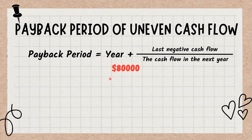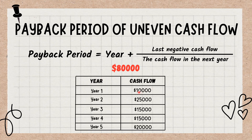A company invested $80,000 in project A, and it is expected that the project will generate $10,000 in the first year, $25,000 in the second year, $15,000 in the third and fourth year, and $20,000 in the fifth year.